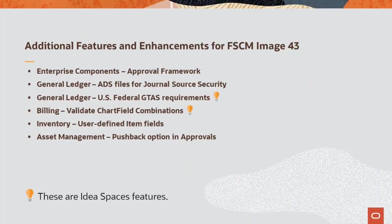Additional features and enhancements added for FSCM Update Image 43 include: the ability for future approvers to view the approval chain and add comments when approving transactions; the ability to create application dataset files using the Data Migration Workbench for journal source security; the ability to send Budget Object Class and the expansion of the Disaster Emergency Fund Code field for government-wide Treasury Account Symbol adjusted trial balance requirements; the ability to run the validation process prior to running the Single Action Invoice and finalize and print processes in billing; the addition of user-defined fields for inventory items; and the addition of the Pushback option in Asset Management Approvals.